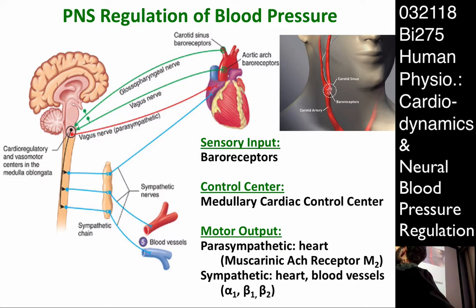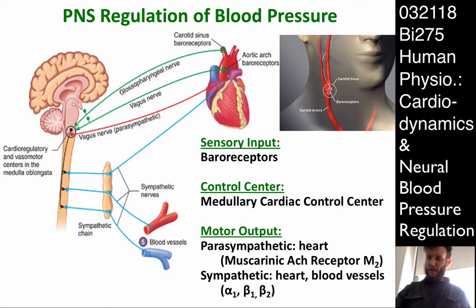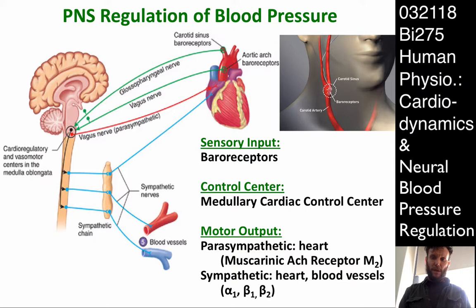I was going to talk about alpha-1, beta-1, and beta-2 receptors of the sympathetics, but I don't have time. That's okay — we covered a lot. Are there any questions?